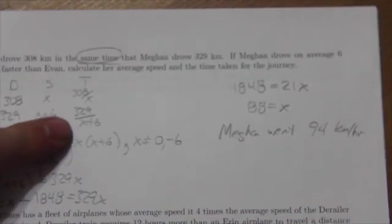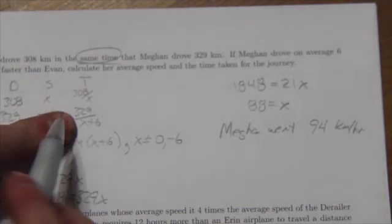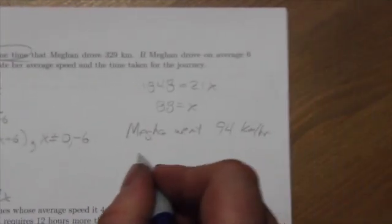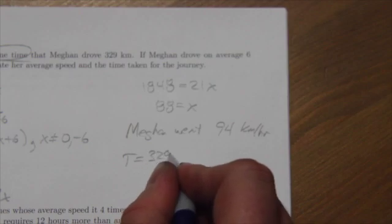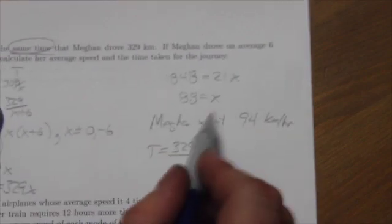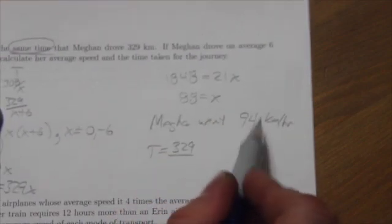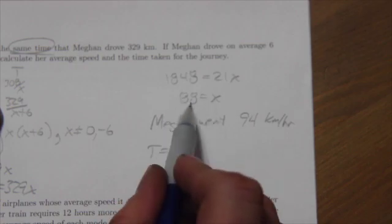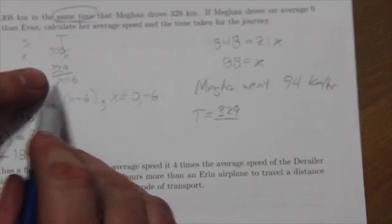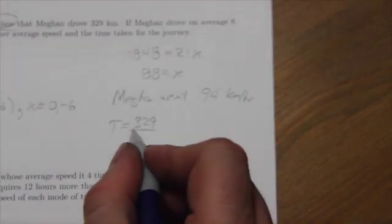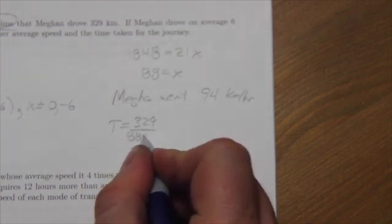And if you want to know the amount of time it took her, we had to plug it into here. So that's got to be 329. So her time is equal to 329 over, now remember, 94 is her speed, but X is 88. So to get her time, it's X plus six. So this will be 88 plus six, which is 94.